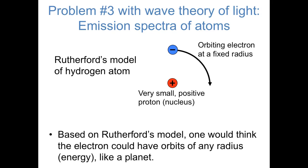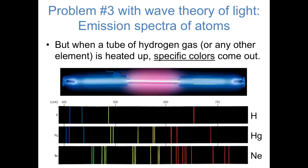So the expectation, based on Rutherford's model of the atom, is that an electron could absorb or emit any amount of energy. But it turns out that that's not true. When you heat up a tube of hydrogen gas, or of the gas of any element, specific colors come out of it. You may have seen this demonstration before, where every element has a characteristic fingerprint, a series of bands of different colors that are emitted when an electron drops from a higher energy to a lower energy.